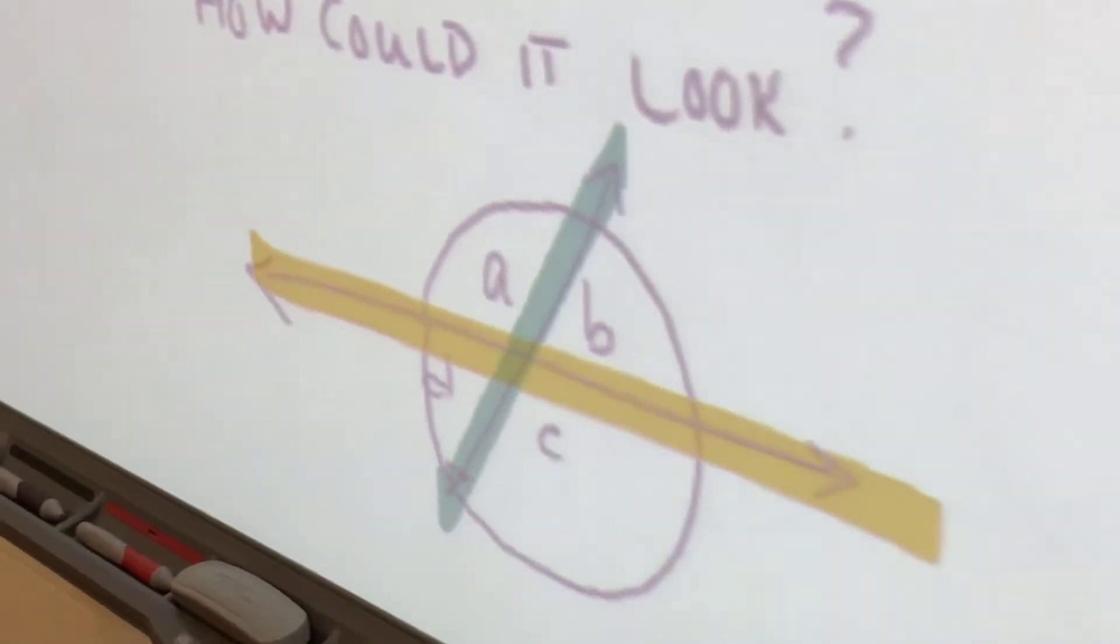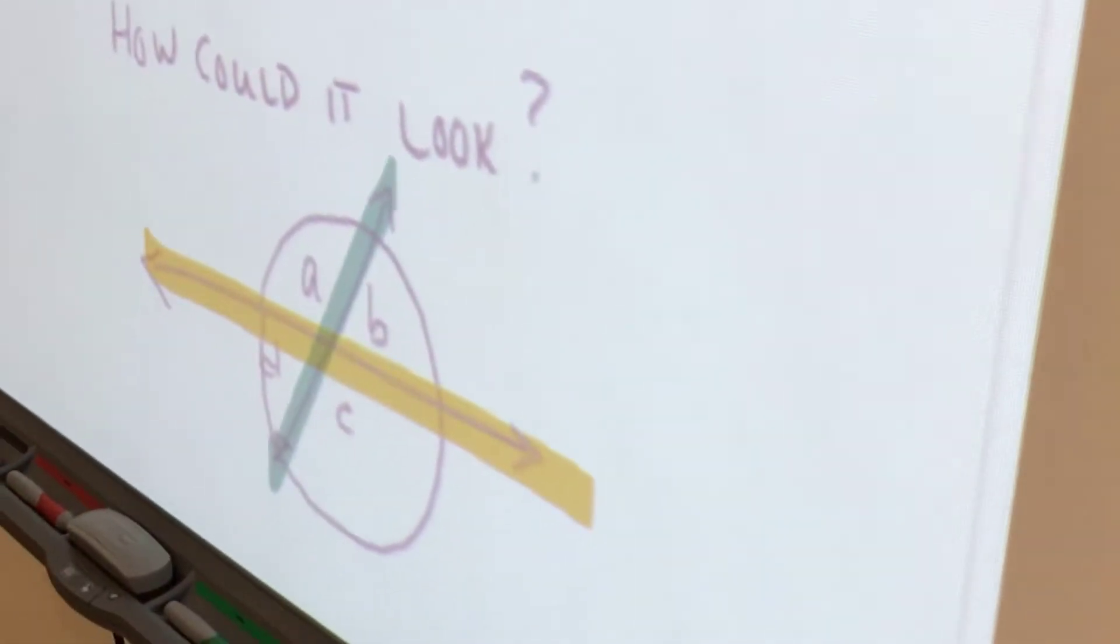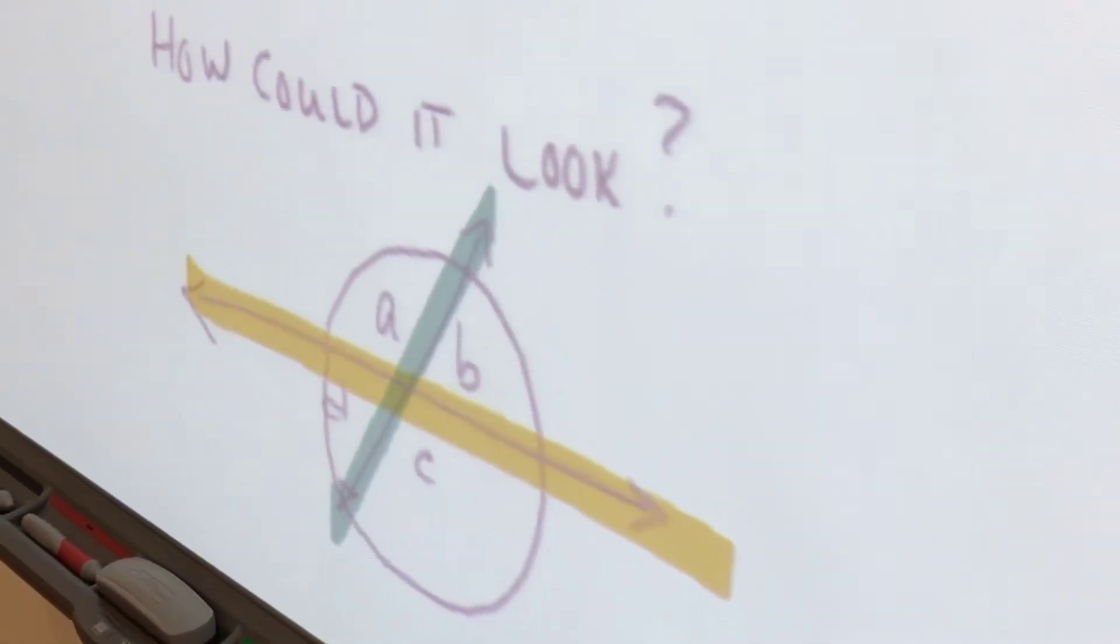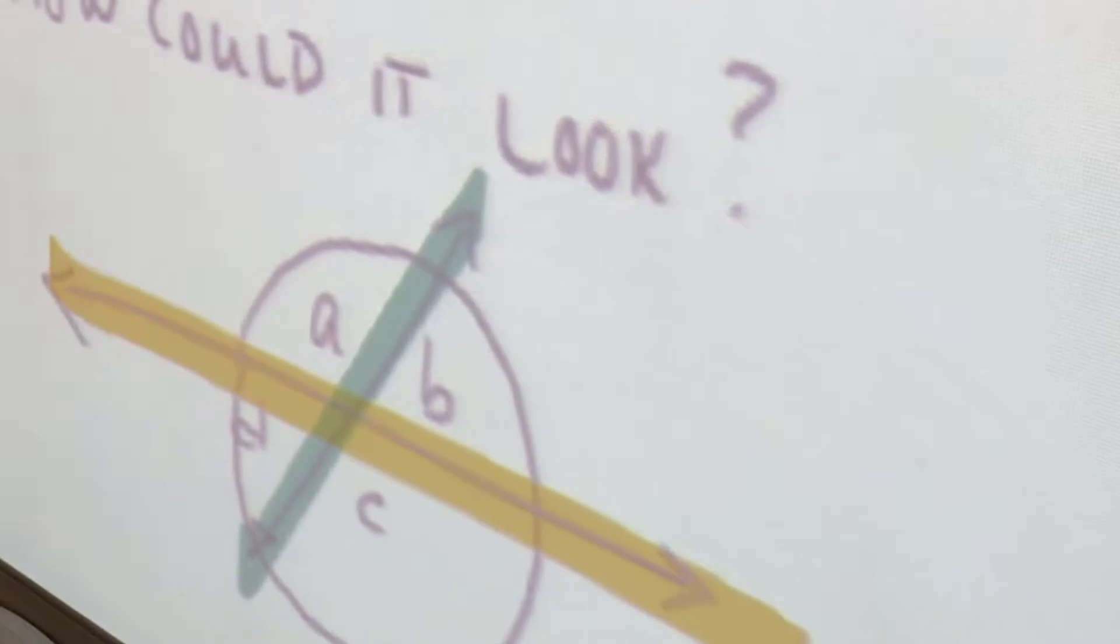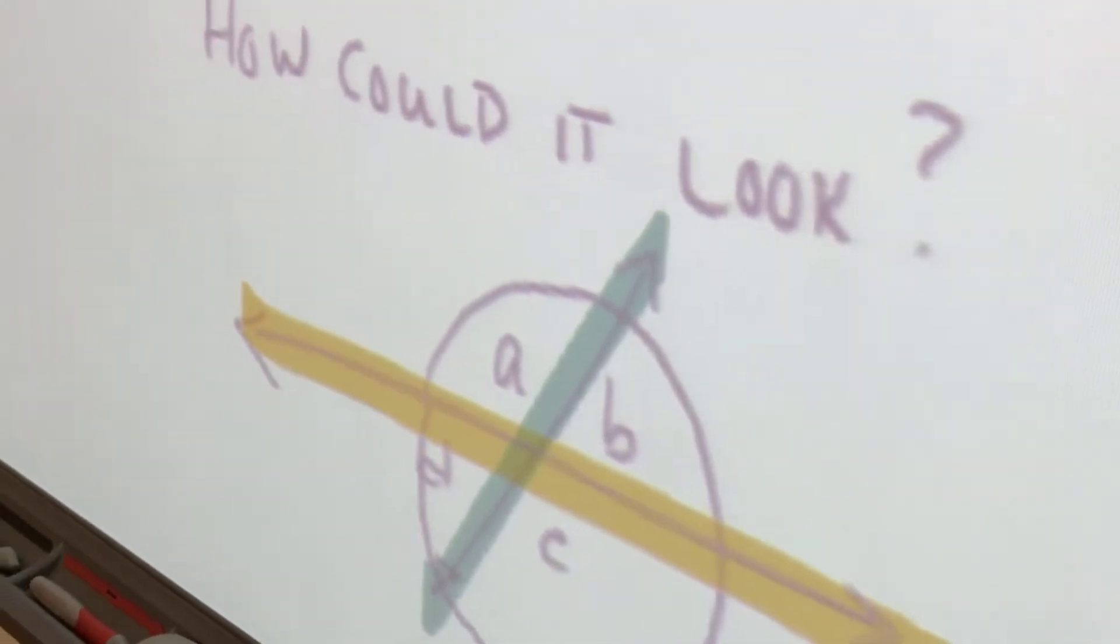Okay. There's another pair. There's another... They're not supplementary. They're vertical. There's another pair of vertical angles. B and D are both acute. Correct? And they're going to be the same size. Now, did you notice something? Did you notice something about this?